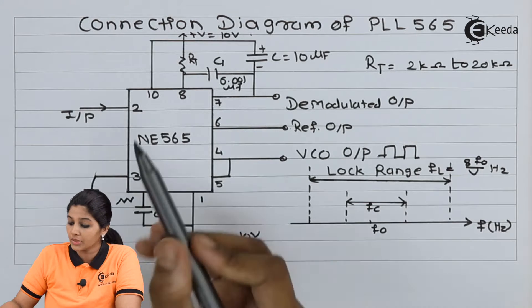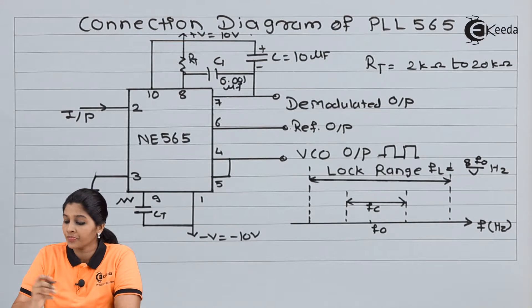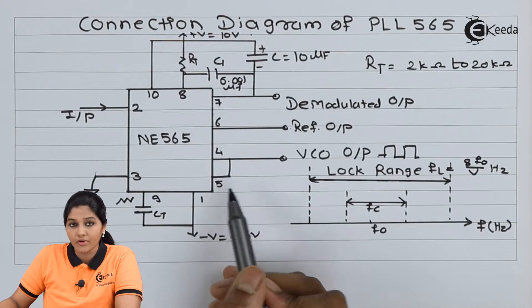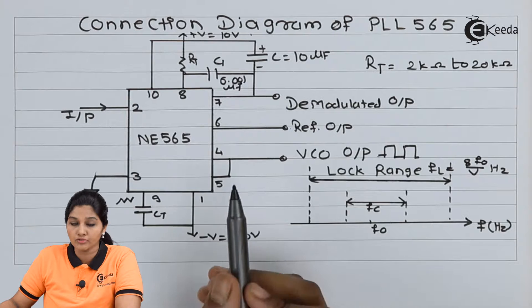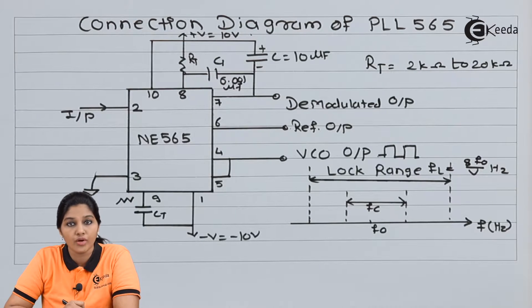Now in this case, pin number 2 and pin number 3 are connected as an input. Pin number 4 and pin number 5 are shorted together and they are used to provide VCO output, which is basically a square wave.